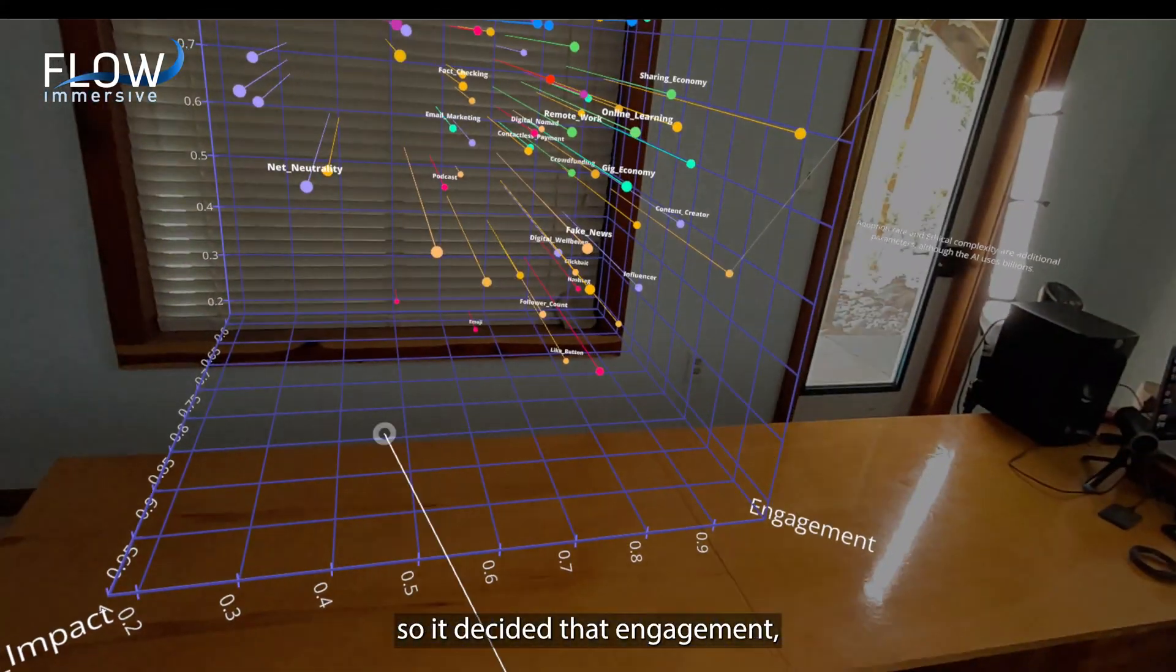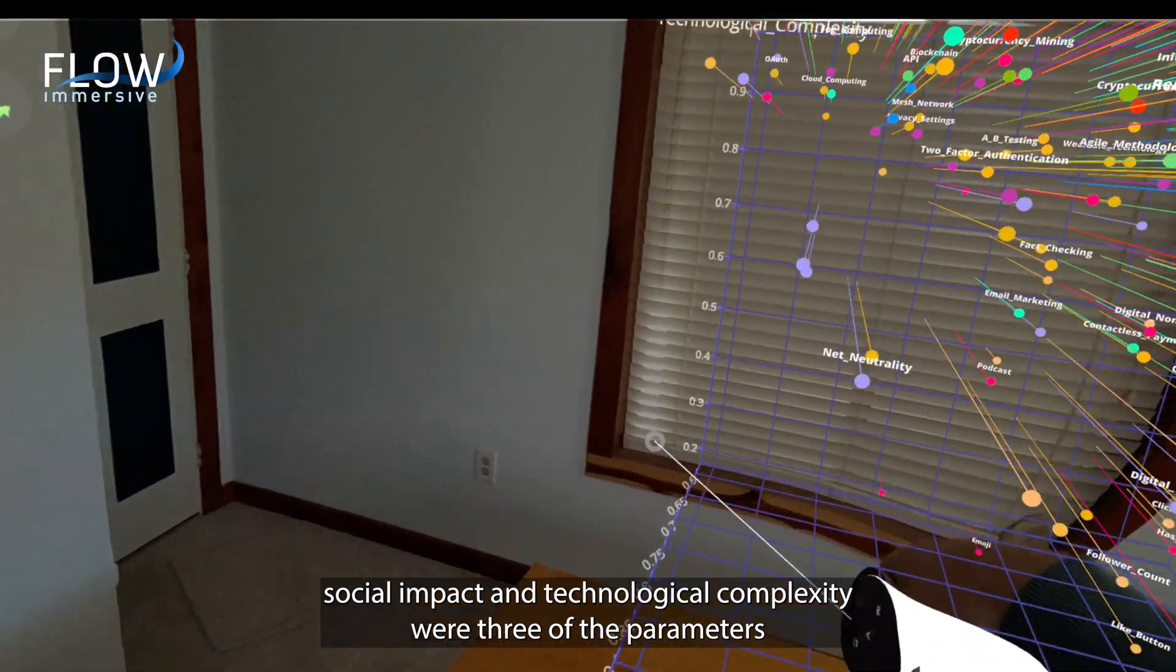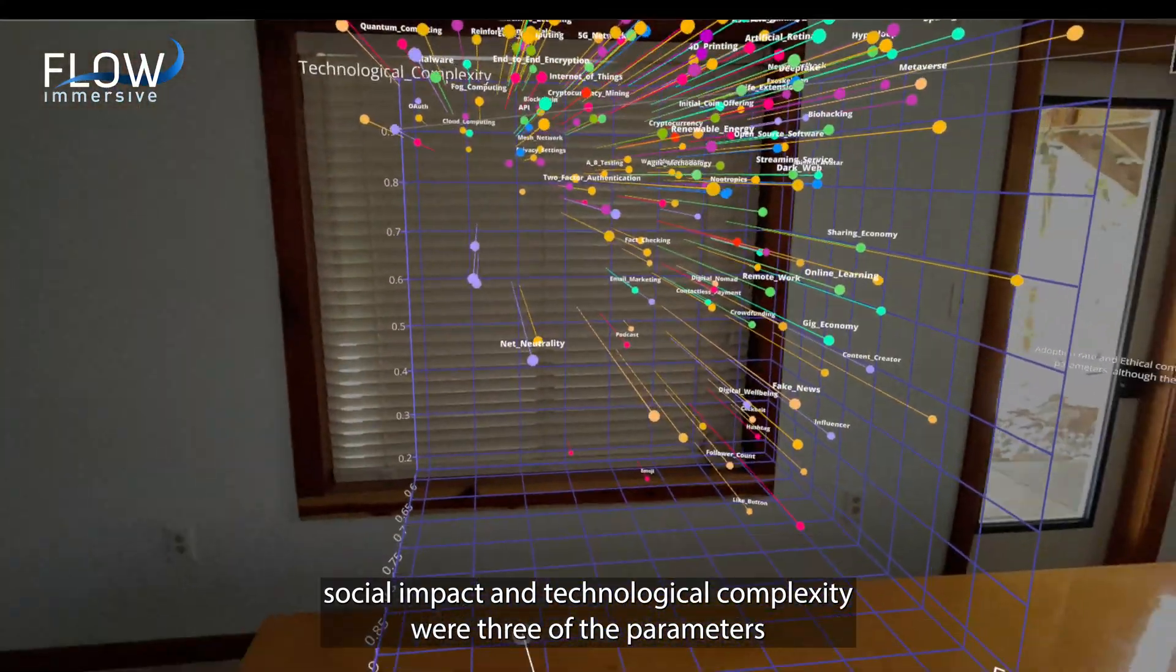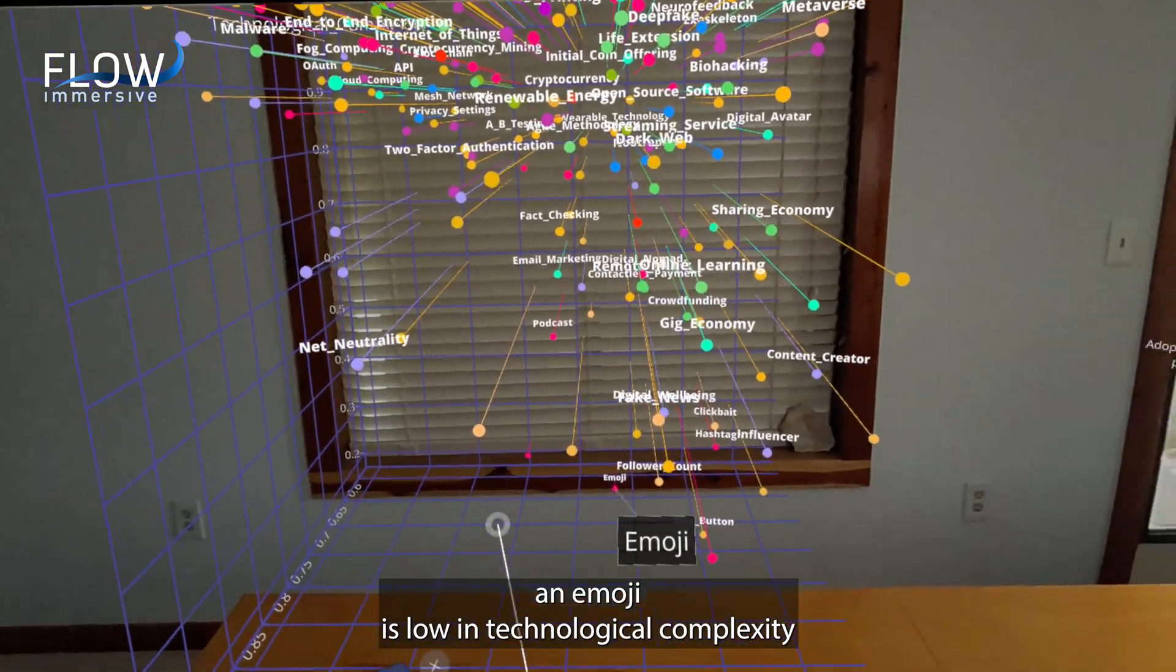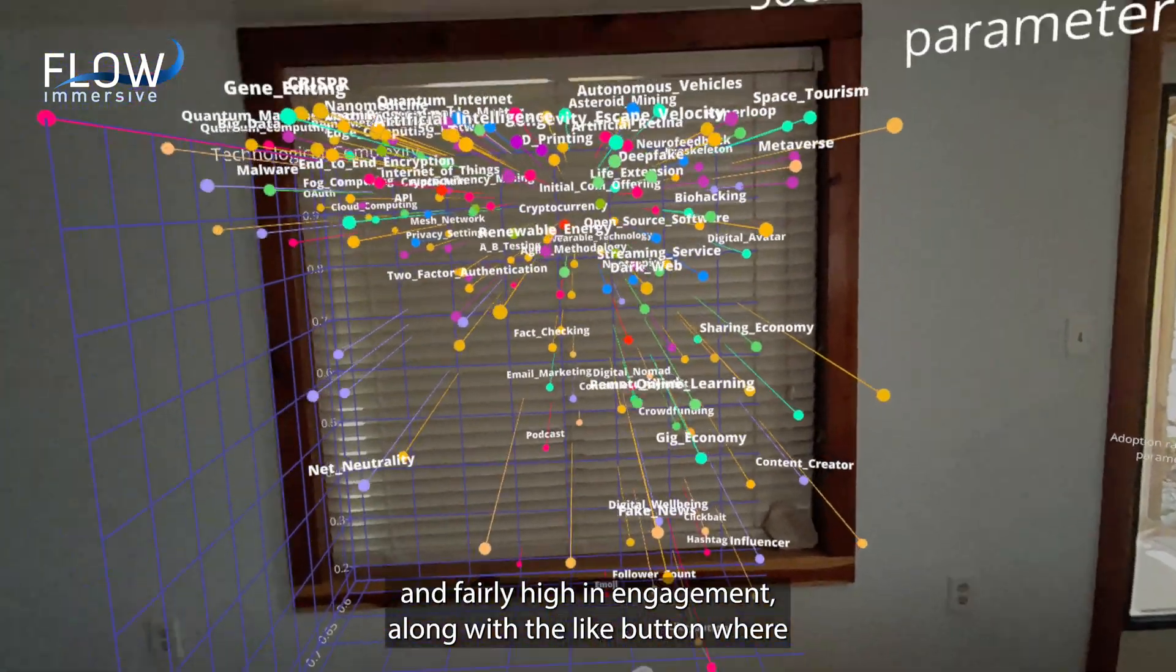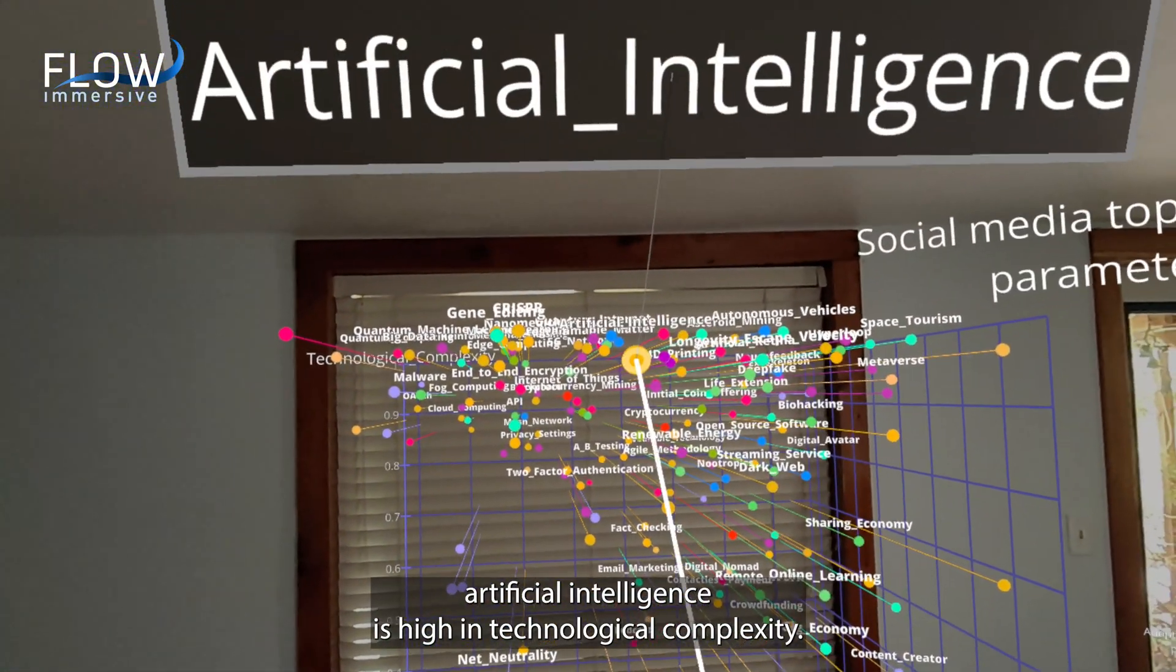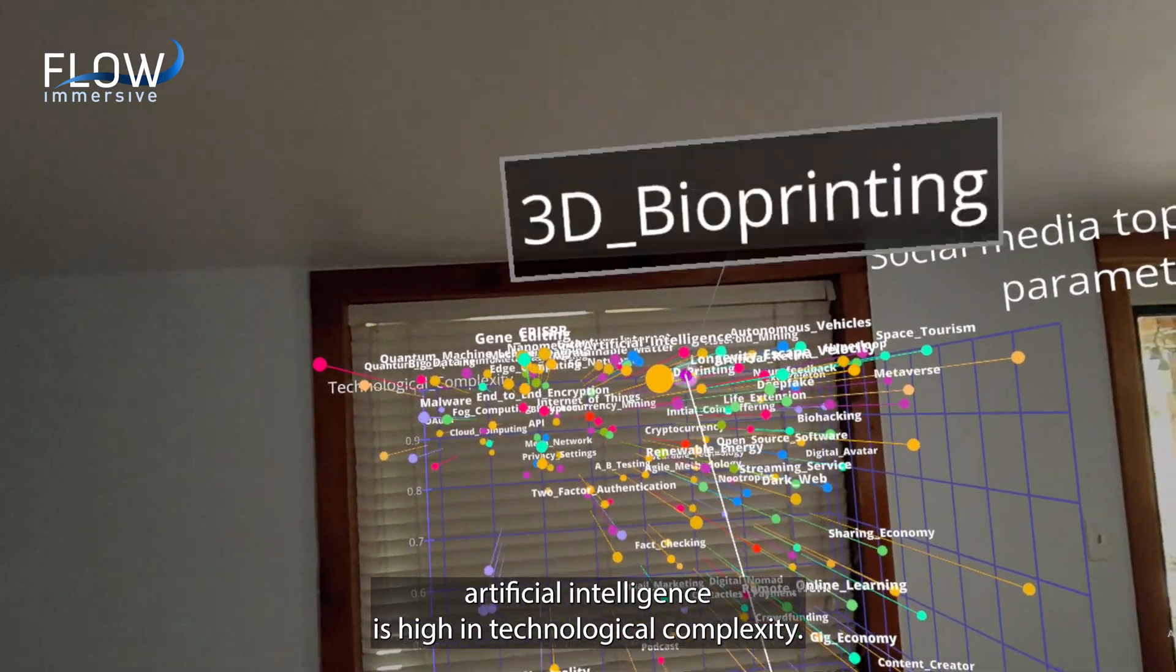So it decided that engagement, social impact, and technological complexity were three of the parameters it cared about. An emoji is low in technological complexity and fairly high in engagement, along with the like button where artificial intelligence is high in technological complexity.